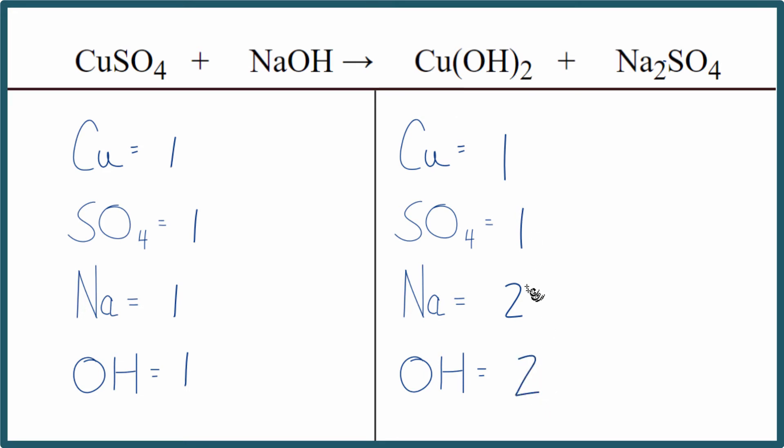So if you look at these numbers, you can see right away, we just need to double the sodium and the hydroxide, and this equation will be balanced. And to do that, we put a coefficient of two in front of the NaOH. One times two, that gives us two, the hydroxide, one hydroxide times two. We have two of those, and we're done. This equation, it's balanced.